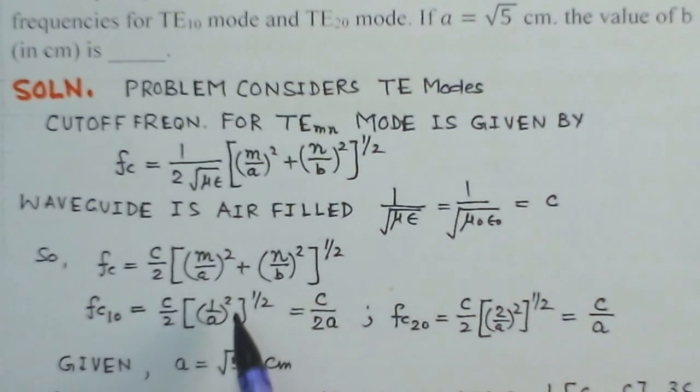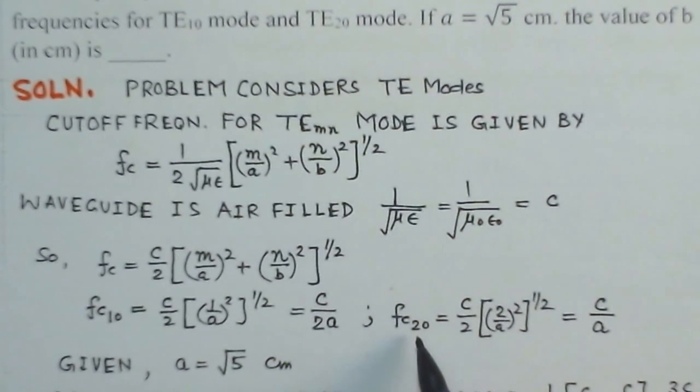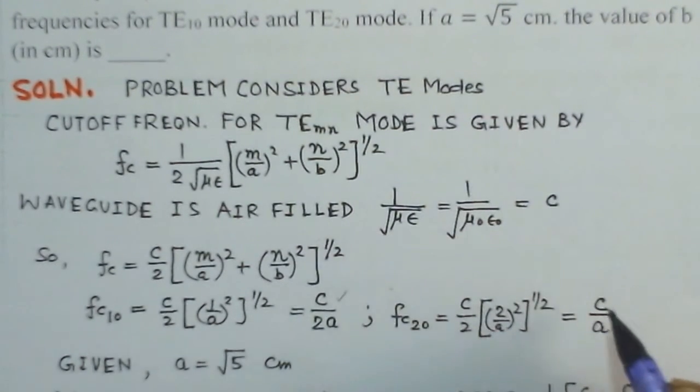Fc10 is the cutoff frequency for TE10 mode. So, this will be C by 2 times 1 over A whole squared to the power half. This comes C by 2A. Similarly, Fc for TE20 mode would be C by 2 times 2 over A whole squared. So, these are the two values C by 2A and C by A.